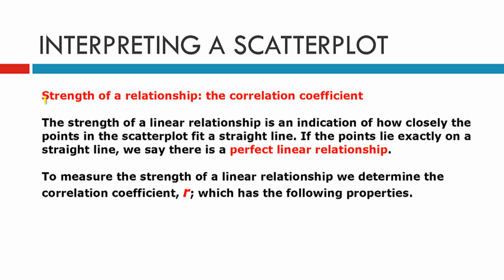Now we look at the strength of the relationship. The strength is known as the correlation coefficient, which we denote with the letter R. This indicates how closely the points in the scatterplot fit a straight line. If they lie exactly on a straight line, we say it is a perfect linear relationship, though that is very hard to achieve. To measure strength, we work out the correlation coefficient, which has the following properties.